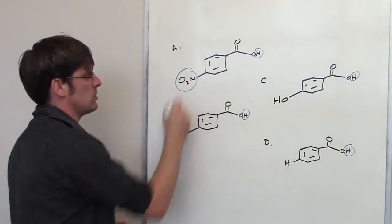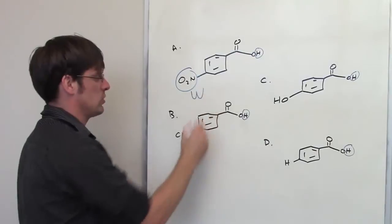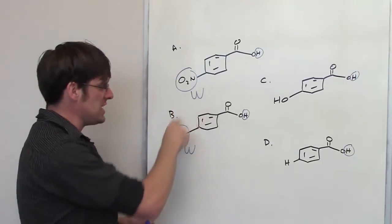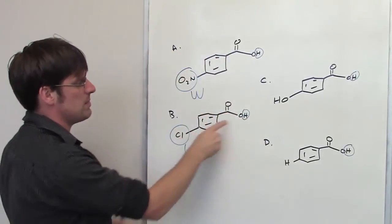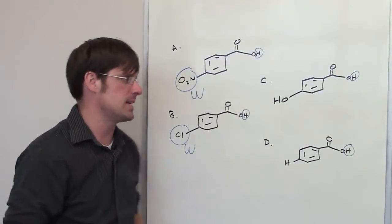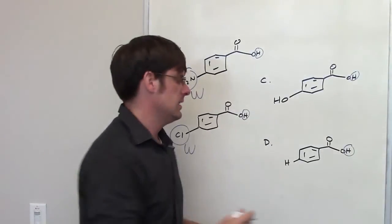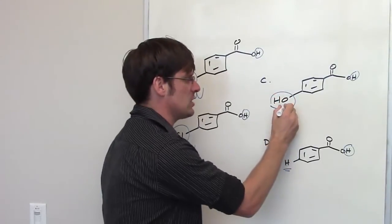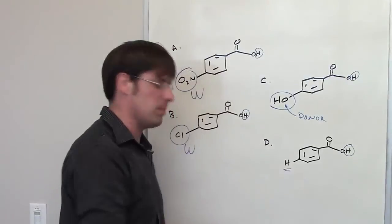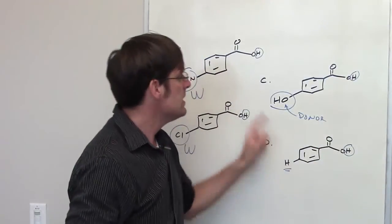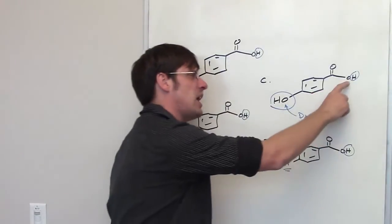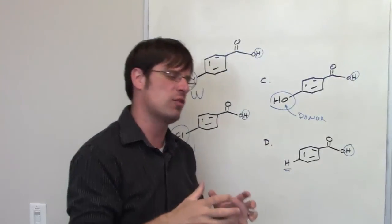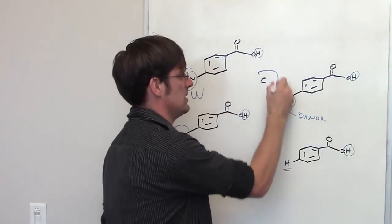The NO2 group is a withdrawer, and chlorine is also a withdrawer by virtue of its electronegativity, so these two groups suck electron density towards them and make the hydrogen on the opposite side more acidic. We're asked which molecule is the least acidic. An OH group is a donating group on a benzene ring — it pushes electrons towards the hydrogen, tightening the grip of that oxygen on the hydrogen and making that hydrogen less easy to remove and therefore less acidic. So the correct answer is C.